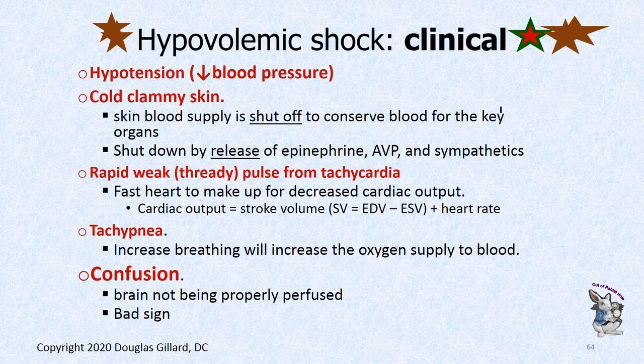What does hypovolemic shock present with? Decreased blood pressure. Epinephrine and AVP will be secreted, sympathetics will be on — all shutting off blood supply to the dermis and skin, so you'll have cold, clammy skin trying to save blood for the core. Your pulse will be thready and weak from the low blood volume, but the heart tries to compensate by pumping harder. If bad enough, you'll have tachypnea and confusion because your brain isn't getting good oxygen.